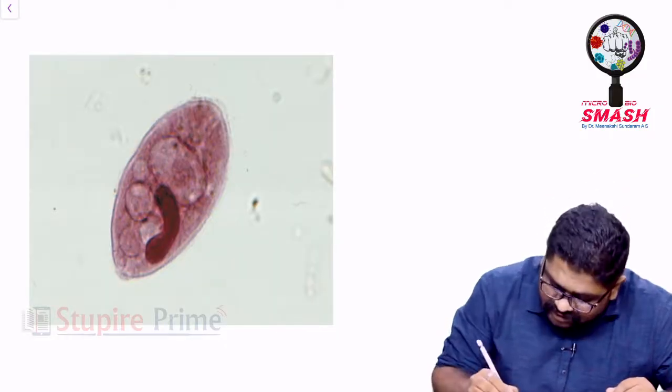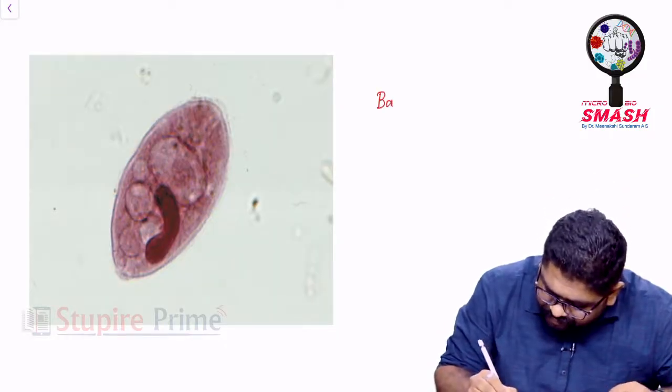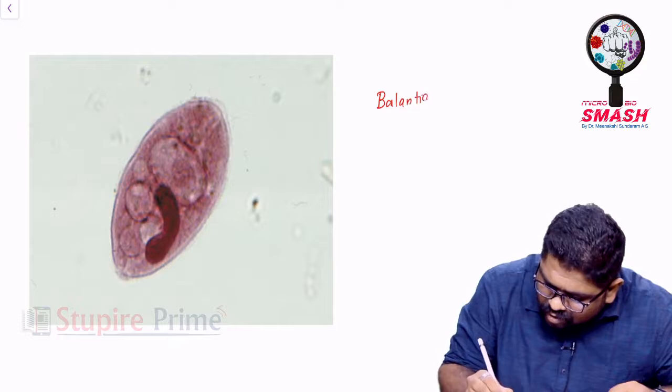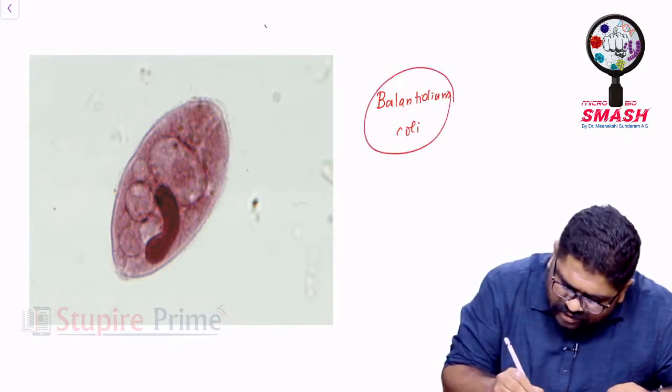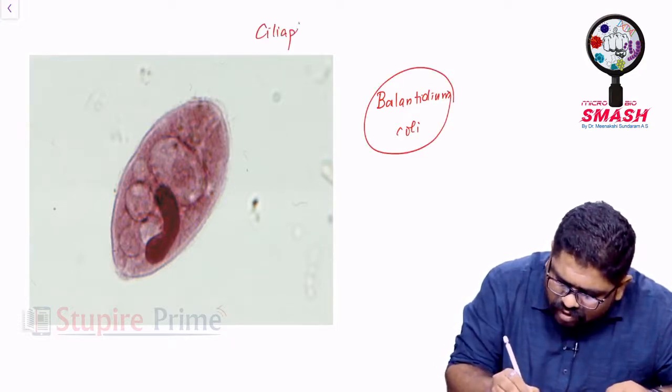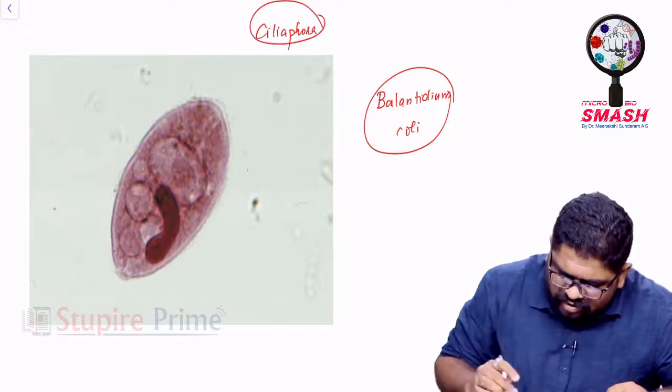What you are seeing here on screen is the trophozoite of Balantidium coli. Remember, this is the only pathogenic ciliate organism that we have to learn.